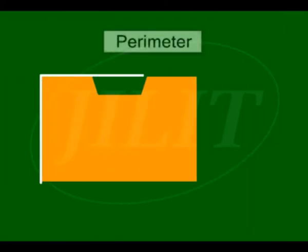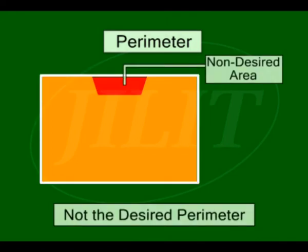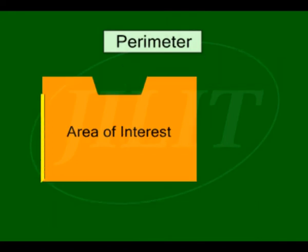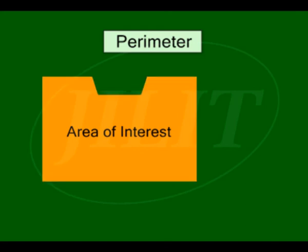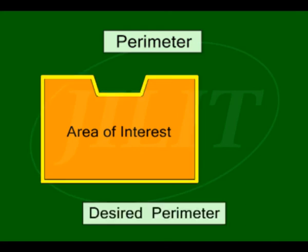One should also understand the area of interest and move only along the periphery of the desired area. This will define the desired boundary and hence the desired perimeter.